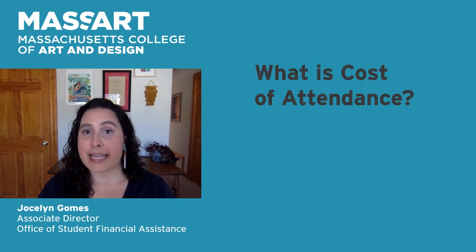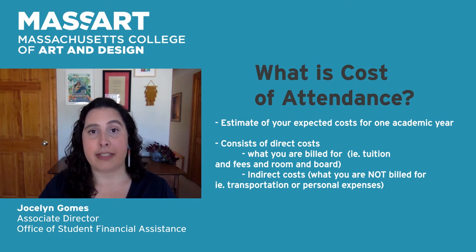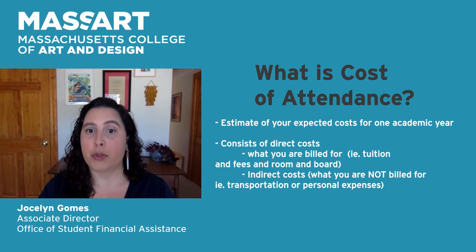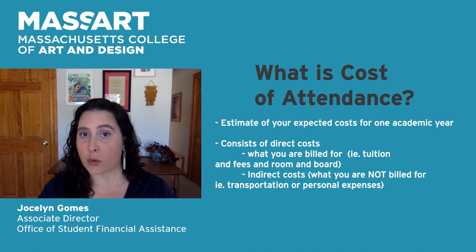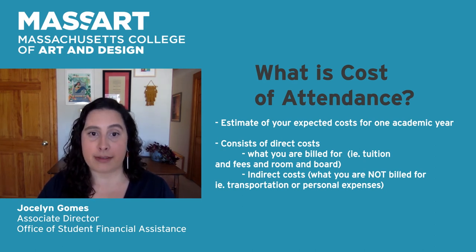What is cost of attendance? Cost of attendance is an estimate of your expected costs for one academic year. It consists of direct costs, which you are billed for, such as tuition and fees or room and board, and indirect costs, which you are not billed for, such as transportation or miscellaneous personal expenses.